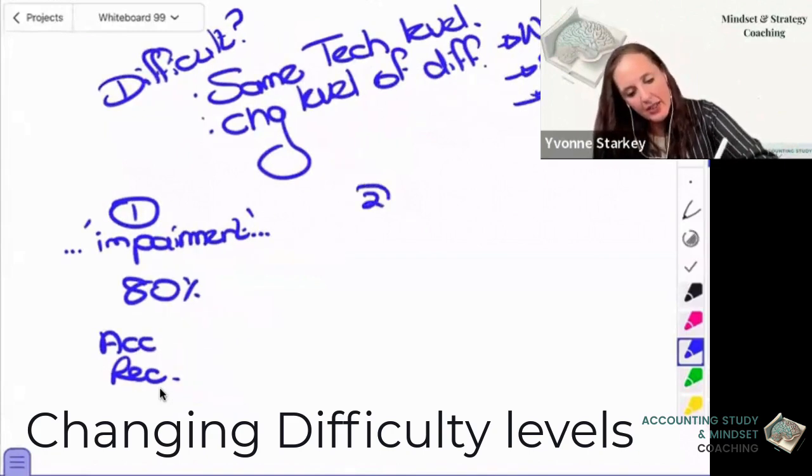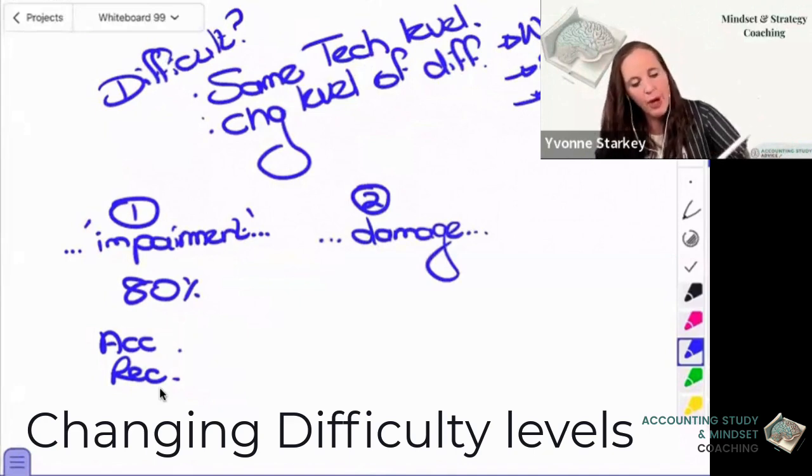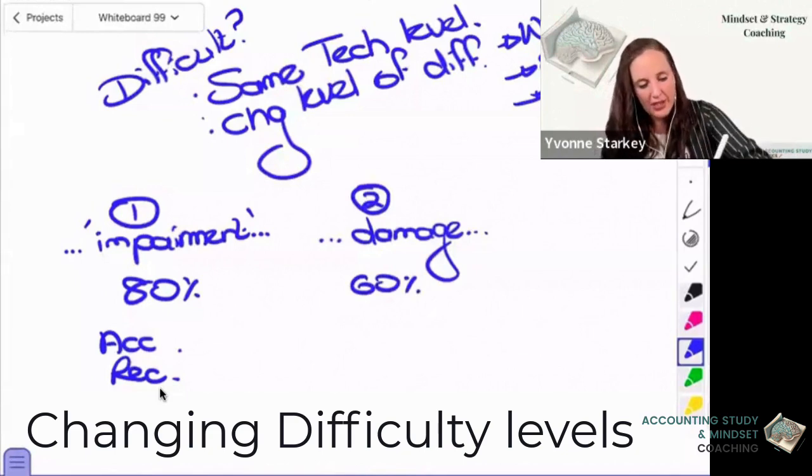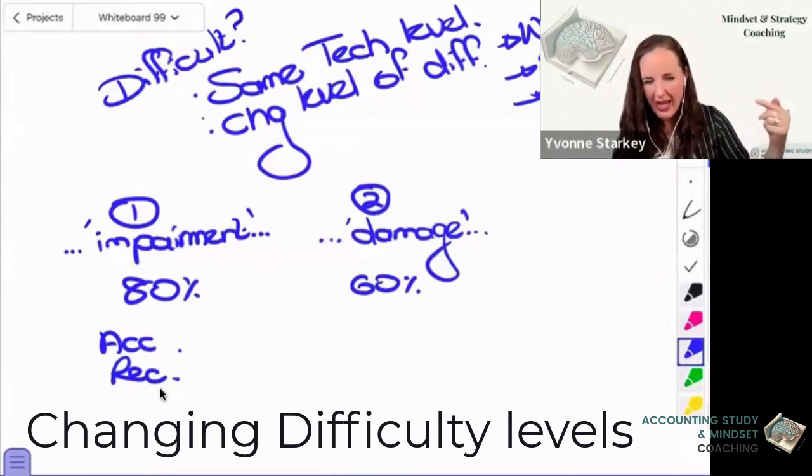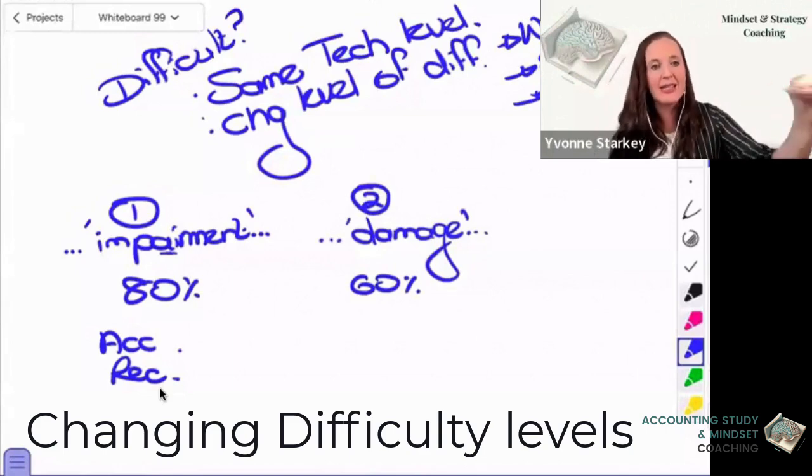However, if I change the wording and I go, Bob's company, they've got assets, and there was some kind of damage to the asset, and I'll ask the same question, my pass rate will probably drop to like 60%, maybe a little bit higher. I don't know, because the key word is different. And students have a tendency to look for the key word.